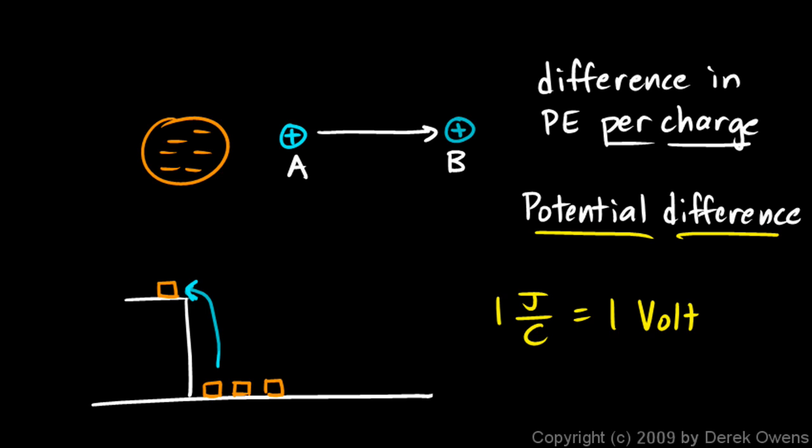One joule per coulomb is equal to one volt — that's what a volt is: a joule per coulomb, abbreviated with a capital V. So if you take one coulomb of charge and move it from A to B, and doing so requires one joule of energy, the potential difference between points A and B is one volt. Let's make this more concrete with an everyday example — think about a toaster.